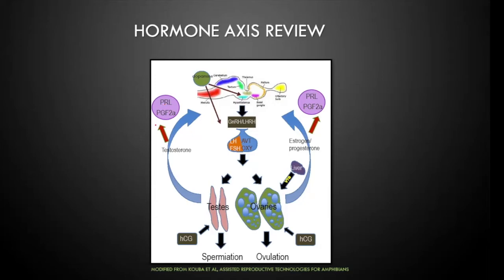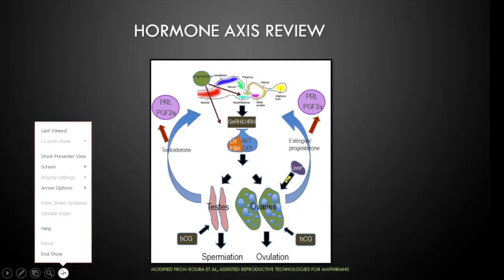Prolactin and PGF2 alpha are two other hormones important in salamander reproduction — they're involved in pheromone release and egg letdown. HCG, human chorionic gonadotropin, is also on the list; it mimics luteinizing hormone and helps produce sperm and eggs. That's the brief review of the hormone axis.